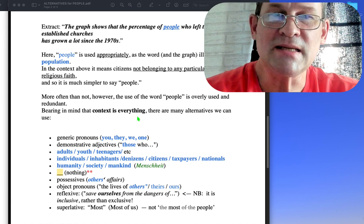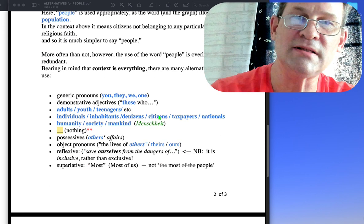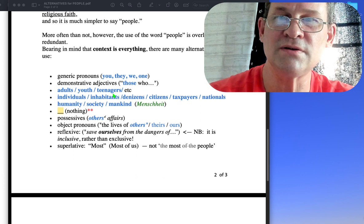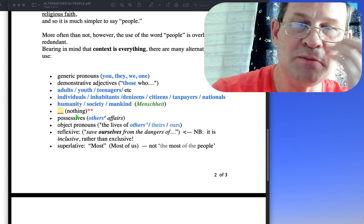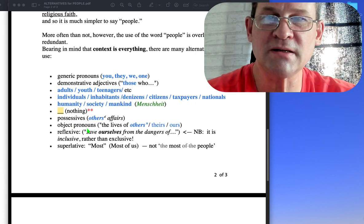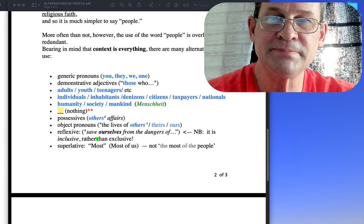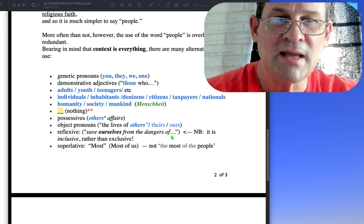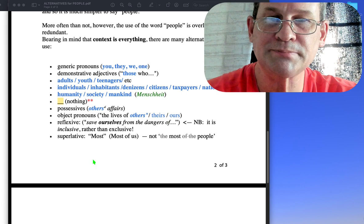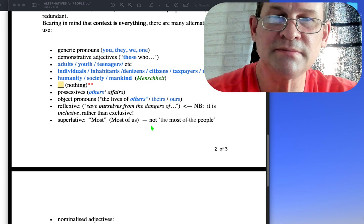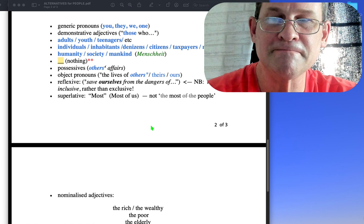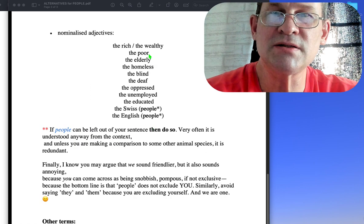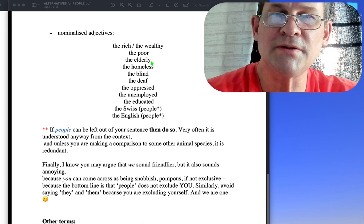Bearing in mind that context is everything, there are other alternatives we can use: generic pronouns, demonstrative adjectives, other nouns to describe people, or nothing at all. Possessives, objective pronouns, reflexive - save ourselves from the dangers of redundancies. It is inclusive rather than exclusive. Nominalized adjectives such as the rich, the poor, the wealthy, the elderly, and so on.